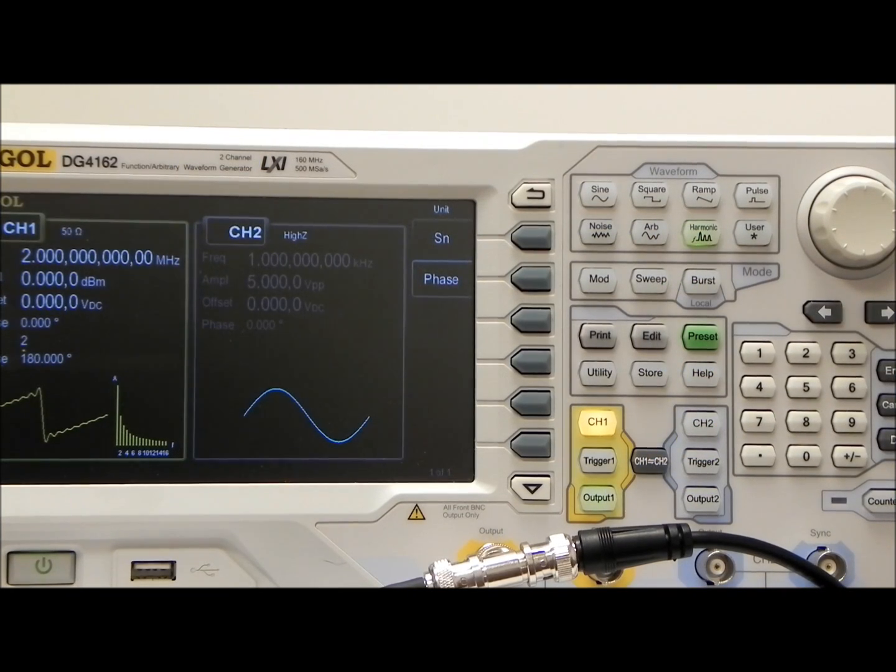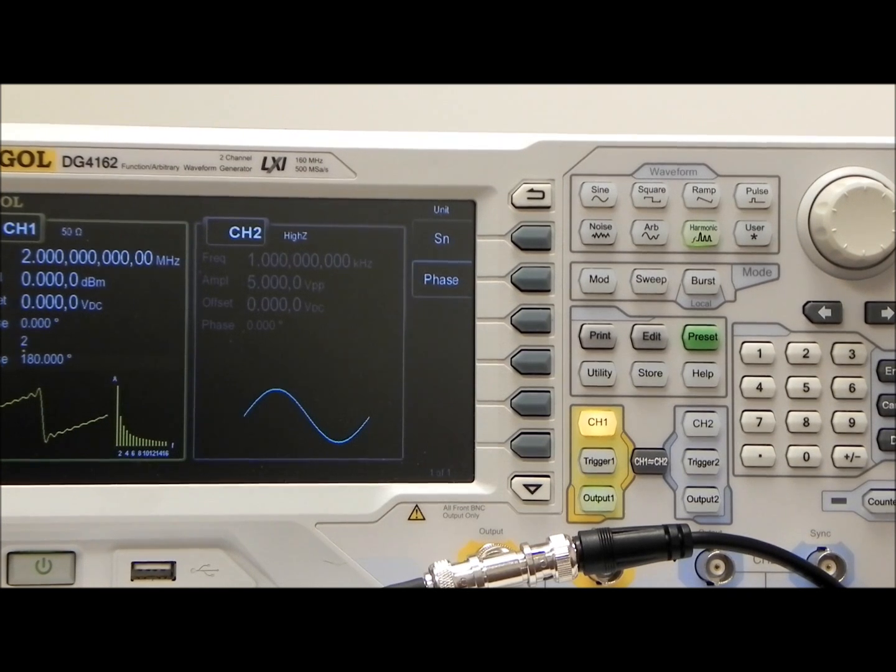So that's some of the features of the harmonic function that is in the DG-4000s. You've seen that you're able to set as many as 16 harmonics and you are able to set them for their amplitude as well as the phase.